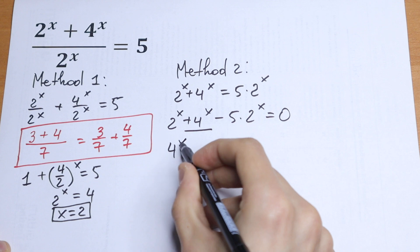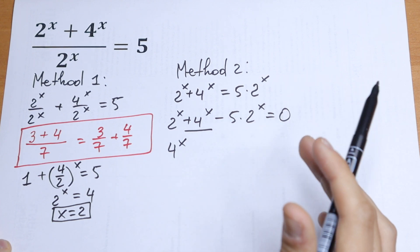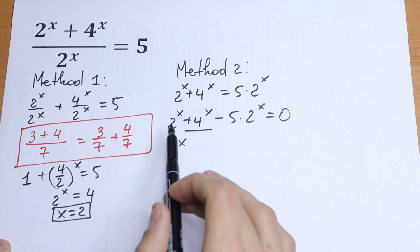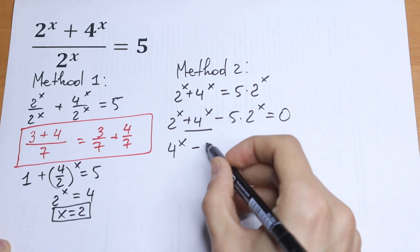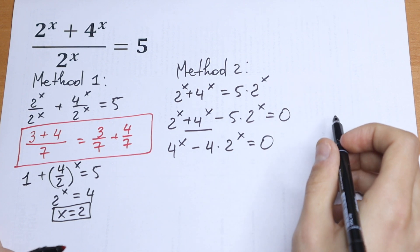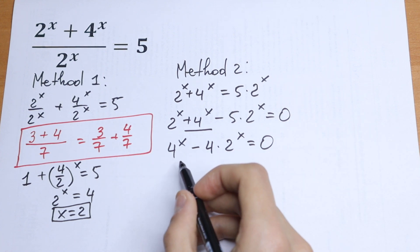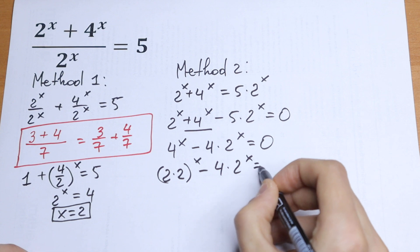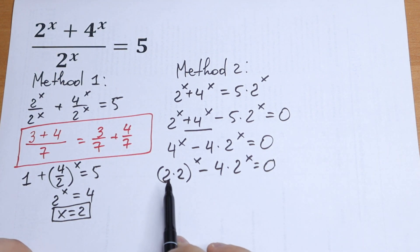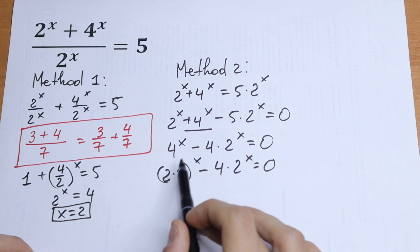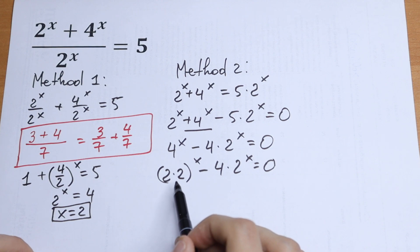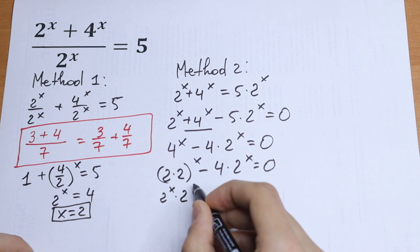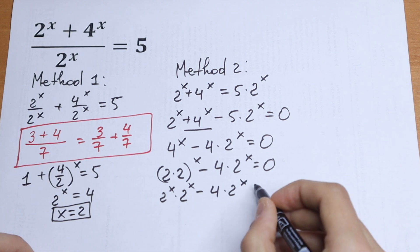We write 4 to the power x first. Then 2 to the power x minus 5 times 2 to the power x — just like x minus 5x equals minus 4x — in our case x is 2 to the power x, so it becomes minus 4 times 2 to the power x equal to 0. We can write 4 as 2 times 2, giving us 2 times 2 to the power x minus 4 times 2 to the power x. We then raise each factor to the power x: 2 to the power x times 2 to the power x minus 4 times 2 to the power x equal to 0.